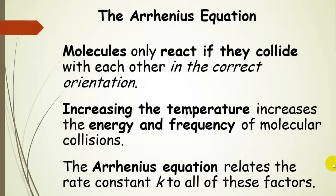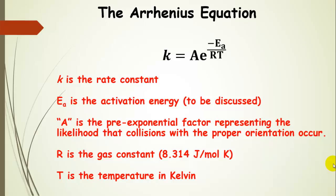The Arrhenius equation relates the rate constant K to all of these factors. The rate constant K is the same one we've been seeing in our rate laws. The term called the pre-exponential factor represents the overall likelihood that collisions with the proper orientation occur.